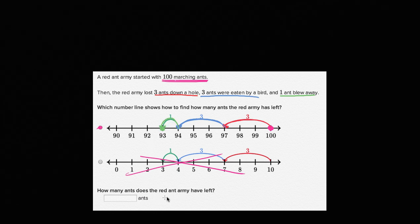So that gets us down to 93 ants left. So the red army, or the red ant army, has 93 ants left. And we are done.